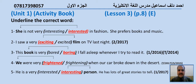Number three: This book is very bored/boring. I fall asleep whenever I try to read it. الاختيار الصحيح: boring اسم الفاعل، لأنه يصف شيئاً — عندنا book. صارت الجملة: This book is very boring. وجاءت بالدور الأول 2016 وبالاختبار 2014.